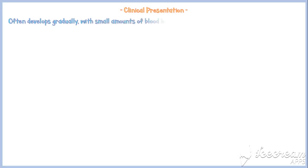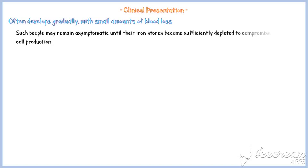Iron deficiency anemia often develops gradually, with small amounts of blood loss. Such people may remain asymptomatic until their iron stores become sufficiently depleted to compromise red cell production.